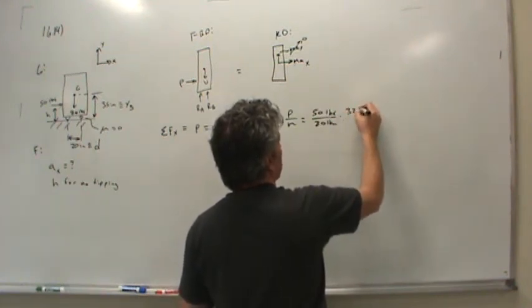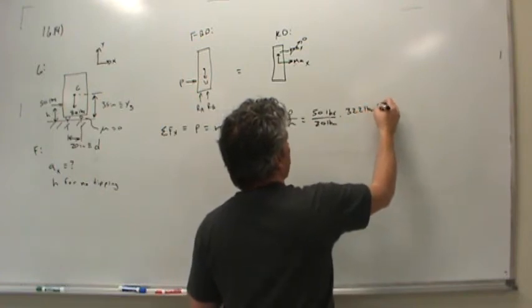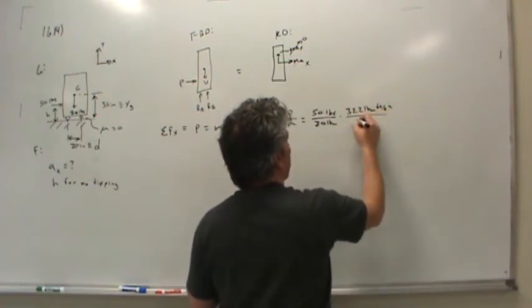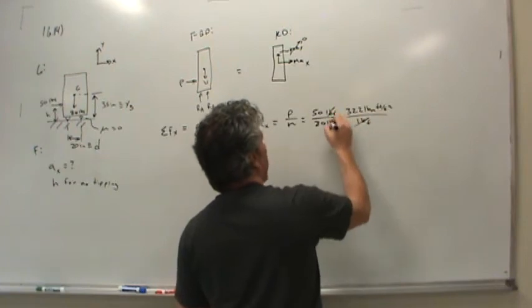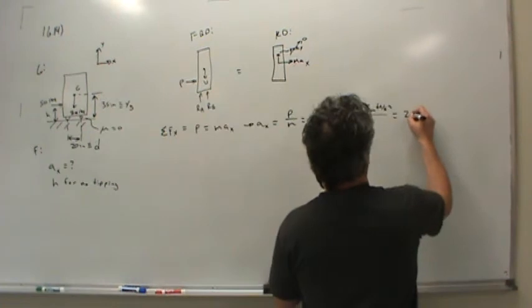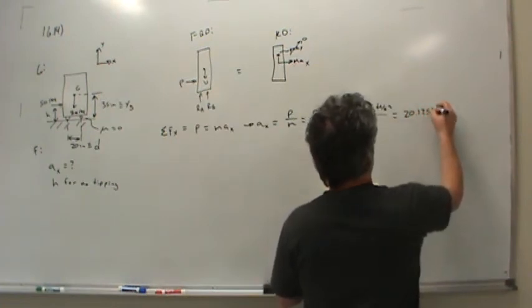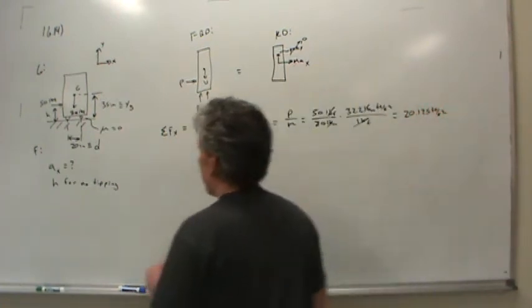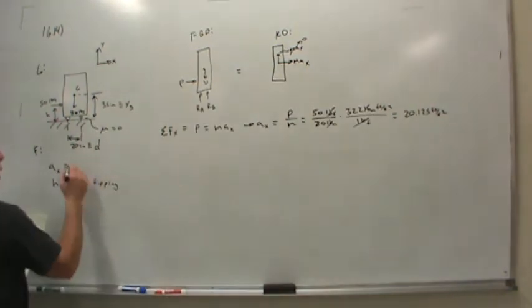So let's write 32.2 pound mass feet per second squared per pound force. If the pound force and pound mass cancel like that, then we can plug this in a calculator and find that this is 20.125 feet per second squared. So we're taking care of the acceleration in the x direction.